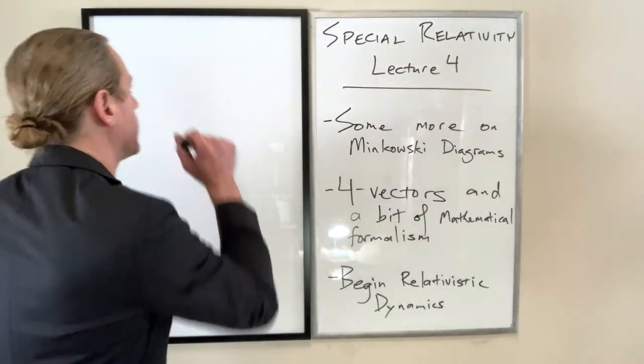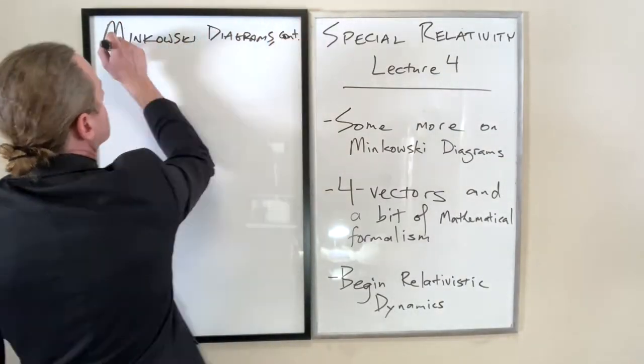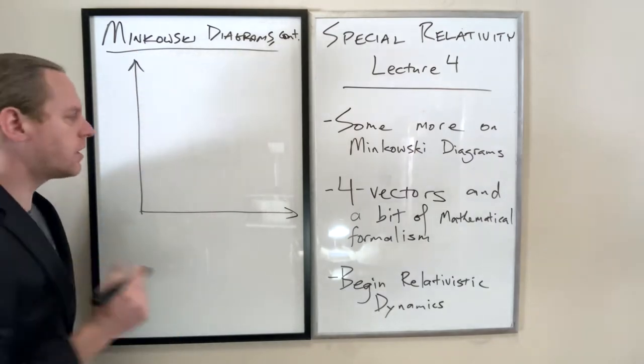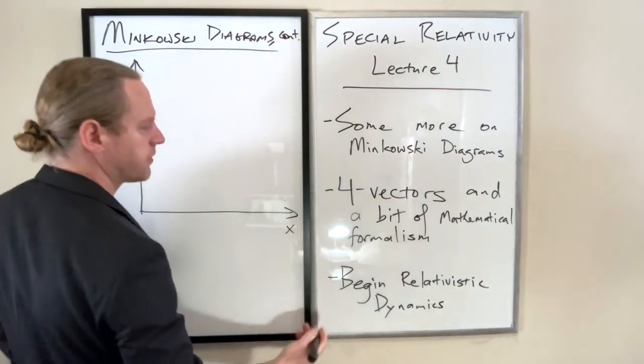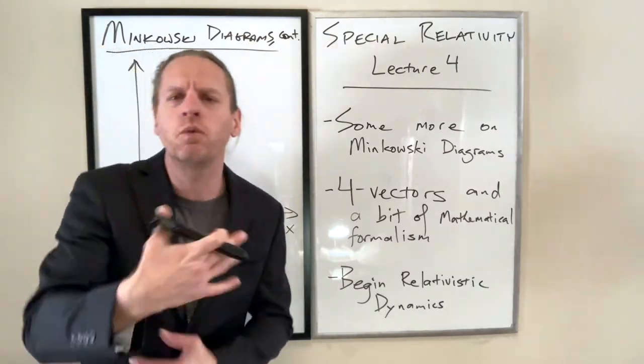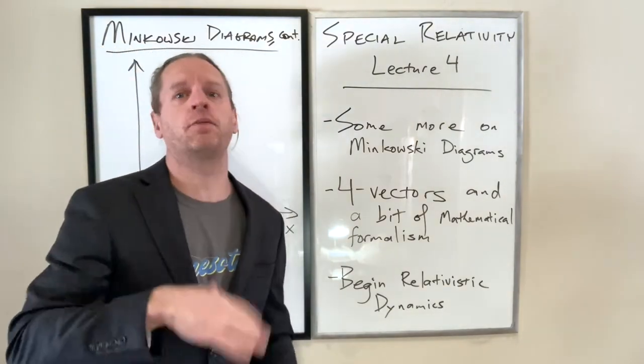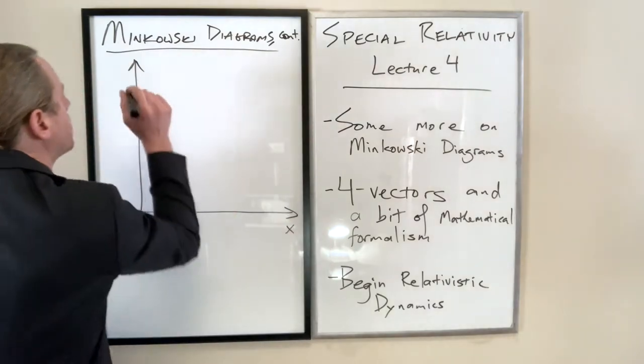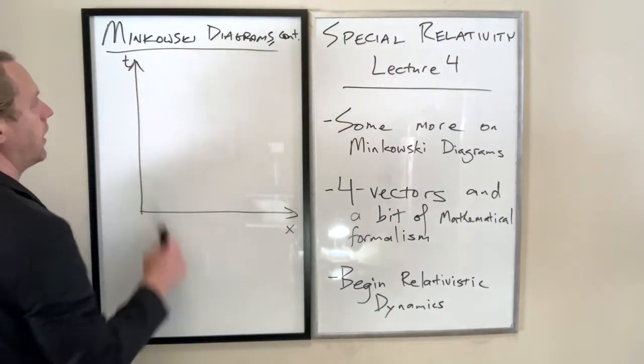I'm going to go ahead and redraw a Minkowski diagram here. We're just going to draw one axis of space, focusing on the x and t axes for now, though we'll relabel things as x prime later.